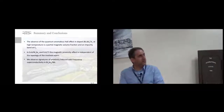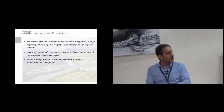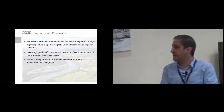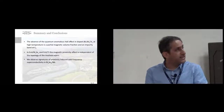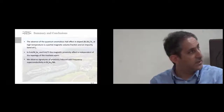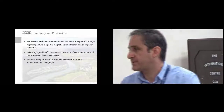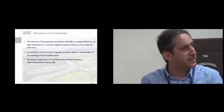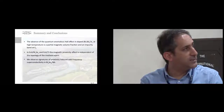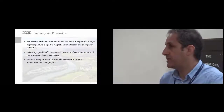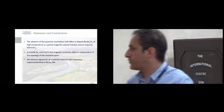In summary: the absence of the quantum anomalous Hall effect at high temperatures in antimony telluride is probably due to a partial magnetic volume fraction and an impurity band at the Fermi energy. For the europium sulfide / topological insulator system, topological properties appear not to contribute to the observed proximity effect. Finally, for the superconductor/topological insulator interface, we see hints of odd-frequency superconductivity. Thank you for your attention.